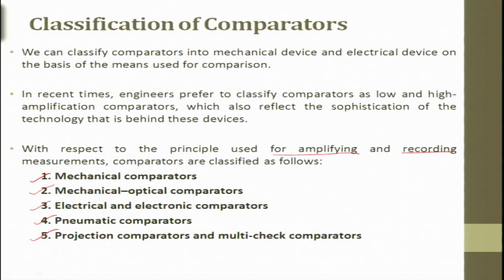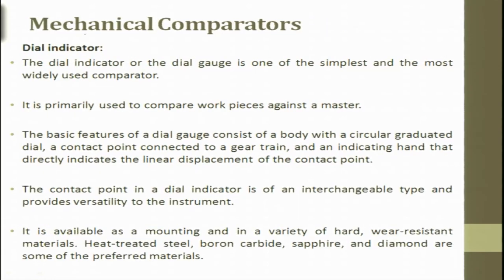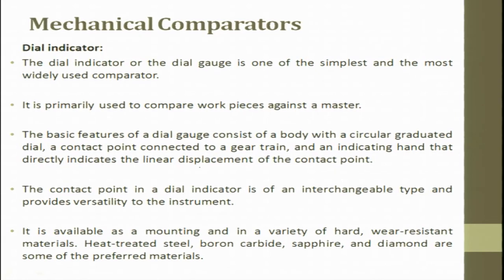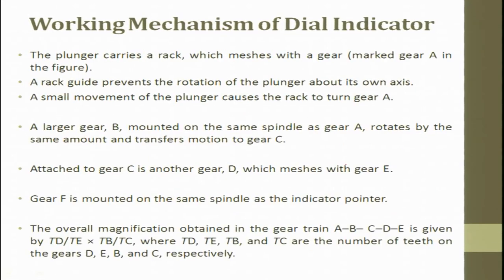Now we are talking about the mechanical comparator — dial gauge. The dial gauge indicator is one of the simplest and most widely used comparators. It is primarily used to compare a workpiece against a master. The basic features consist of a body with a circular graduated dial, a contact point connected to a gear train, and an indicating hand that directly indicates the linear displacement of the contact point.